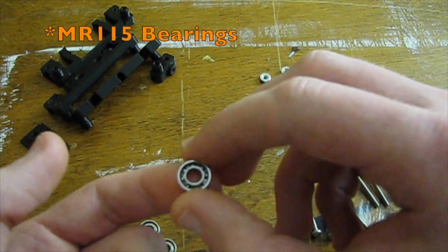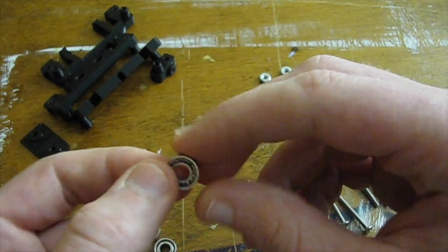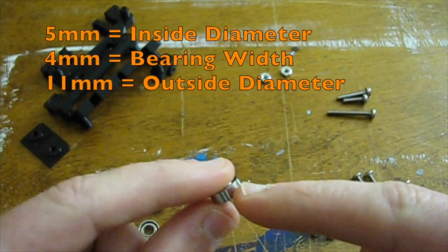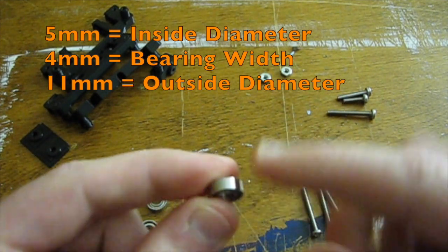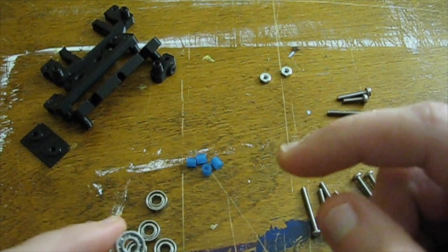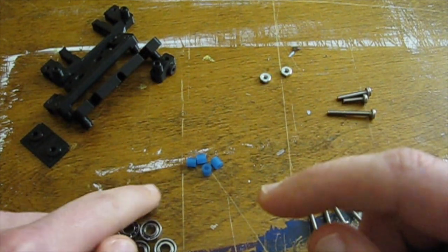These are M115 ball bearings which are 5x11x4mm. The 5 stands for the inside diameter. The 4 stands for the width of the diameter and 11 is the total diameter across the bearing there. You're going to need 6 of them. And I go into another video on how you're going to clean those.